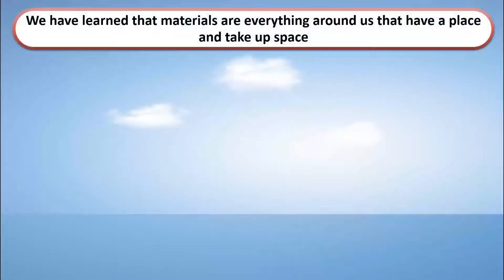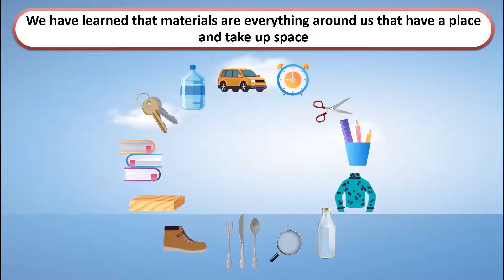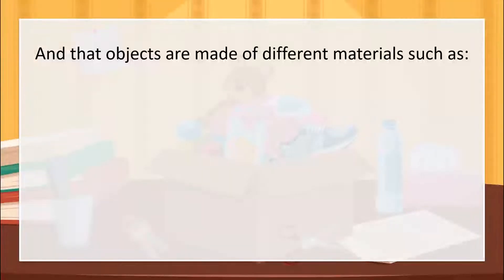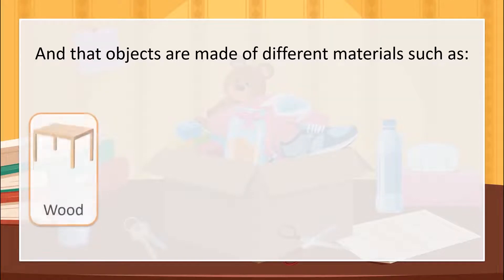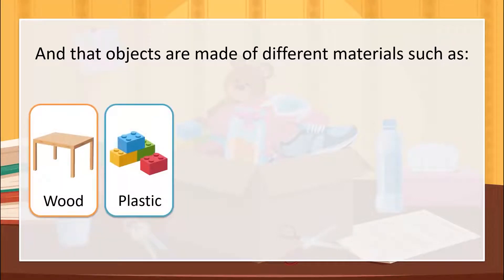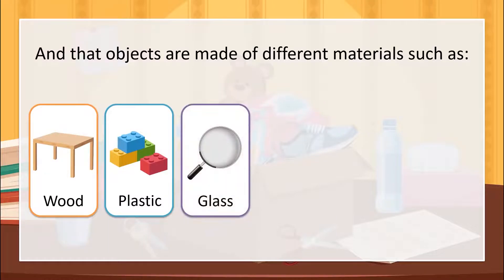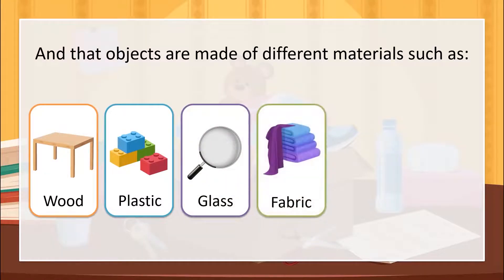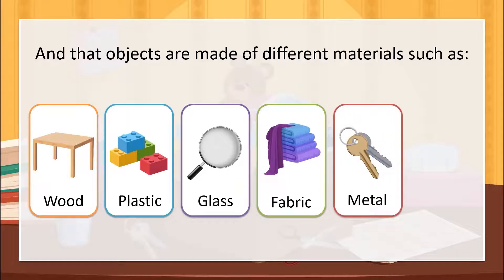We have learned that materials are everything around us that have a place and take up space. We also know that objects are made of different materials such as wood, plastic, glass, fabric, metal, and paper.